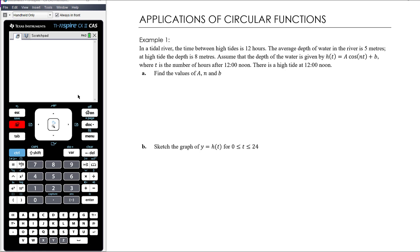Let's work through this problem. In a tidal river, the time between high tides is 12 hours. The average depth of water is 5 meters, and at high tide the depth is 8 meters. Assume the depth is given by h(t) = a·cos(nt) + b, where t is the number of hours after 12 noon, and there is a high tide at 12 noon.